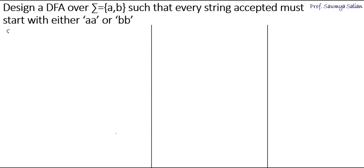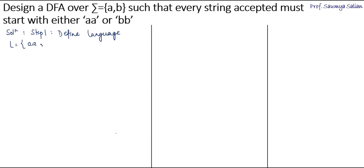Let's begin the solution. Step 1 is to define the language. The language will contain all possible valid strings. The smallest valid strings are AA and BB, since every accepted string must start with either AA or BB.